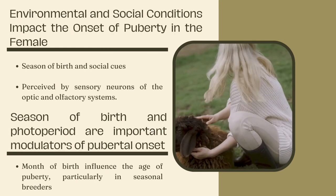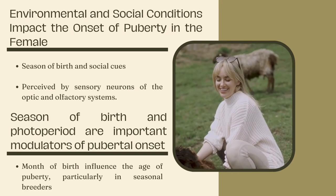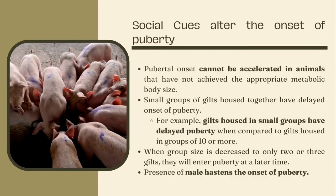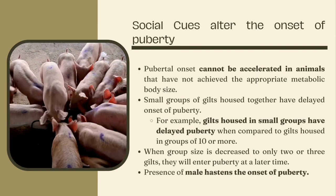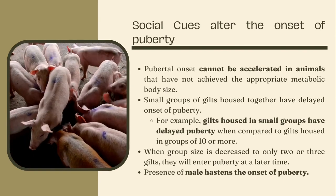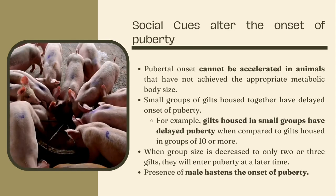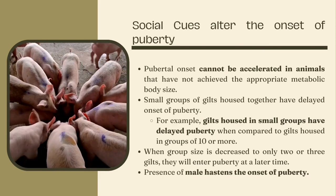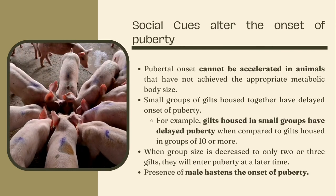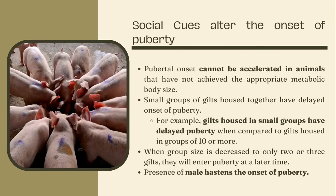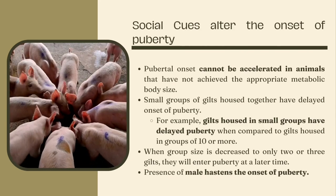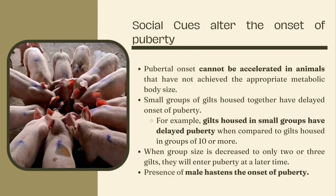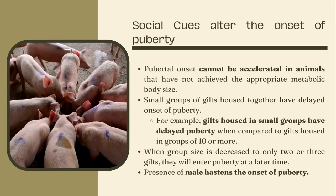Sheep are an excellent example because they are seasonal breeders that begin their estrous cycles in response to short-day lengths. Social cues greatly impact the onset of puberty in many mammalian species. Females reaching puberty in the presence of males have a more excellent opportunity to become pregnant. However, pubertal onset cannot be accelerated in animals without the appropriate metabolic body size to trigger hypothalamic responsiveness to estradiol. Specific social cues inhibit the onset of puberty — small groups of gilts housed together have delayed onset of puberty.